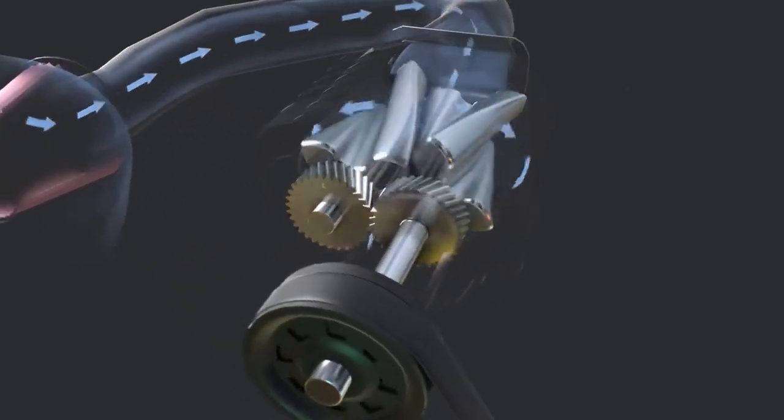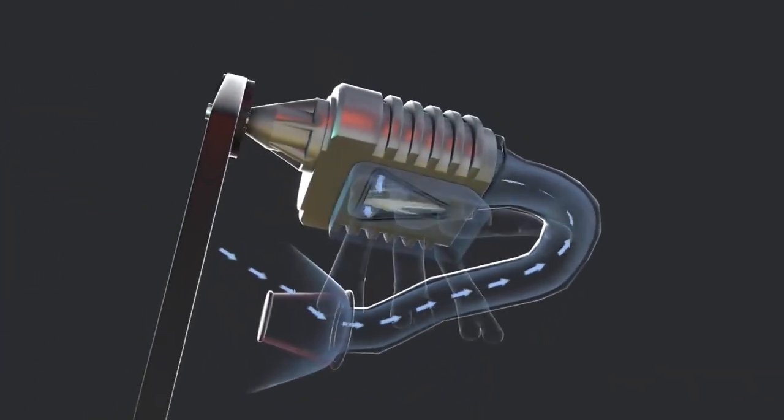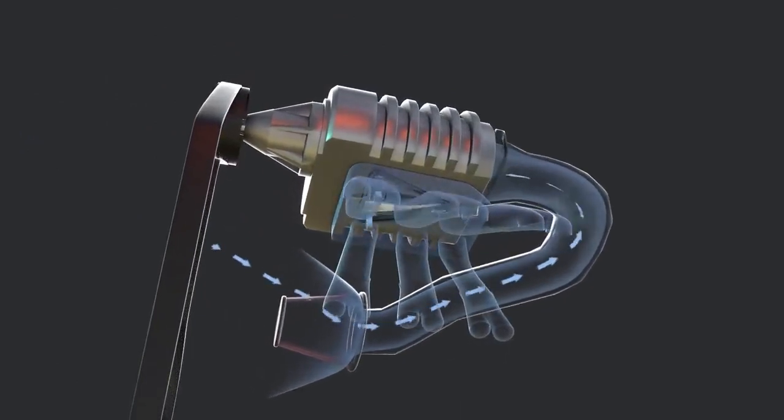The long fins or ridges that span the length of the rotor shaft are called lobes. Air exits the supercharger through a specially shaped discharge port at the bottom of the housing.